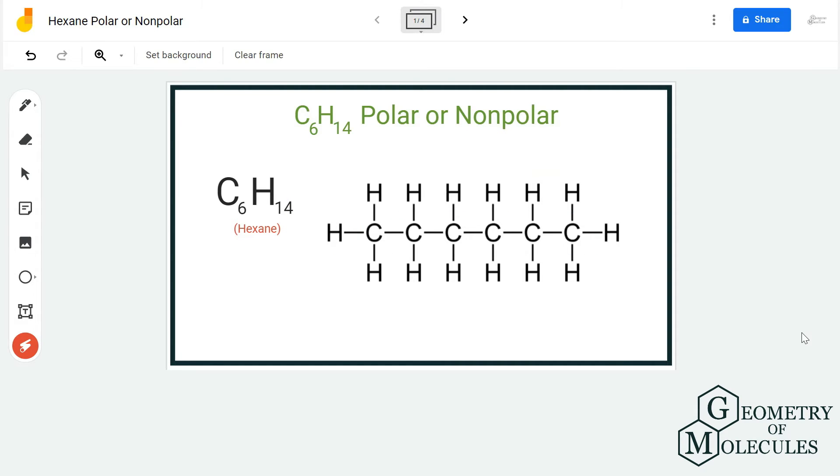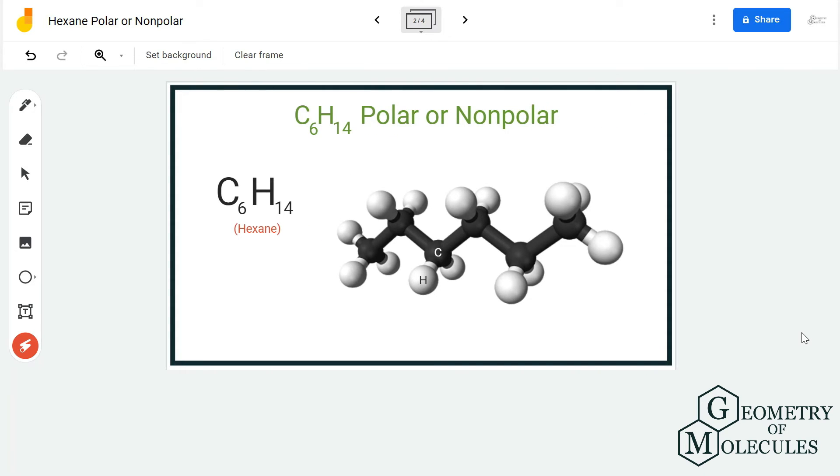This is the arrangement of carbon atoms and hydrogen atoms you can see over here. Now that we know the arrangement and the Lewis structure, we can proceed to finding out the electronegativity difference between hydrogen and carbon.